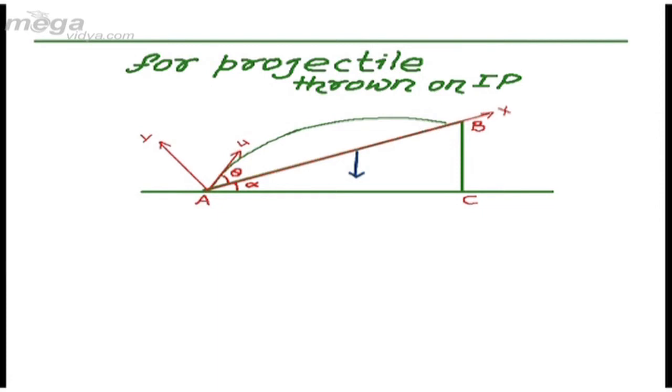Here we can easily write acceleration due to gravity to be g vertically downward. If we want to take this acceleration g, then this angle will also be alpha. So g can be resolved in two mutually perpendicular directions: down the incline it becomes g sin alpha, and perpendicular to the incline it becomes g cos alpha.